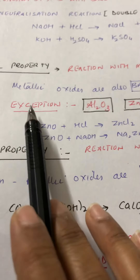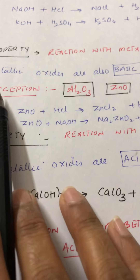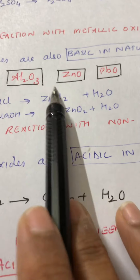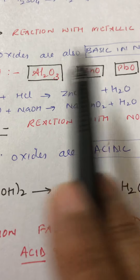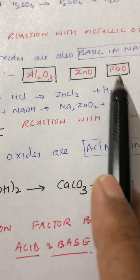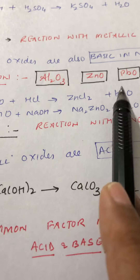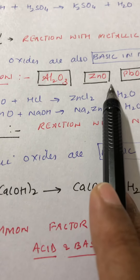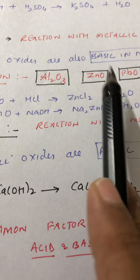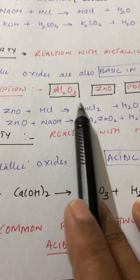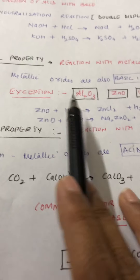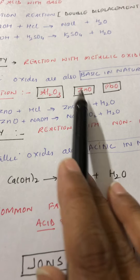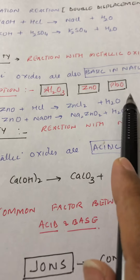Metallic oxides are basic in nature. However, as discussed in the previous video, there are three metals which are exceptions: aluminium, zinc, and lead. These three metals are amphoteric in nature.